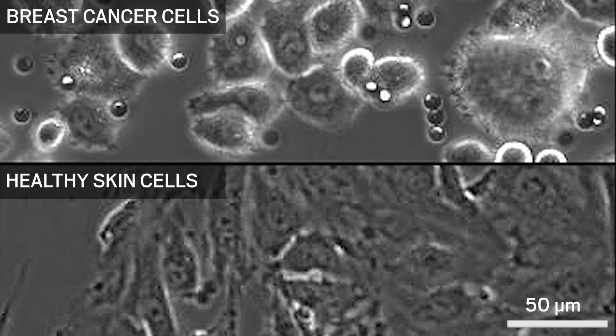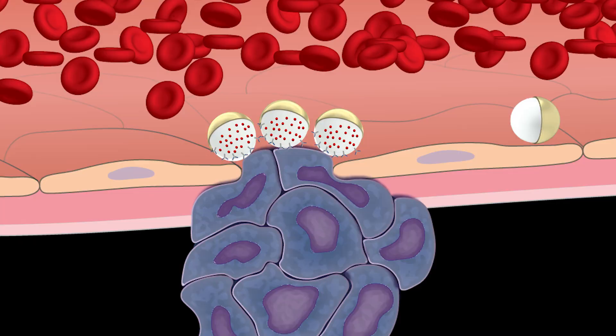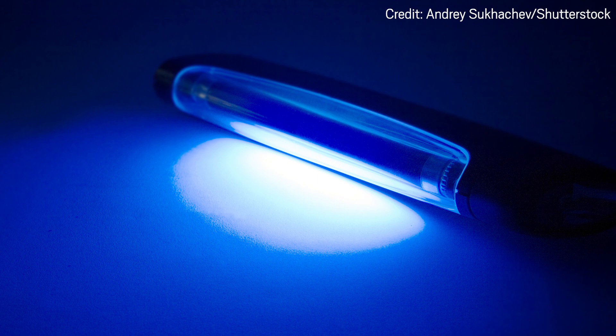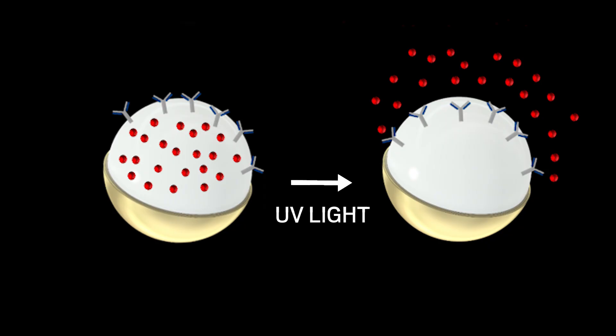Once the bots reach a tumor, researchers could zap them with UV light to trigger a chemical reaction that releases the cancer drug payload. But prolonged UV exposure can damage healthy cells, so Sitti says his team is working on other ways to release the drug, such as using a change in temperature.